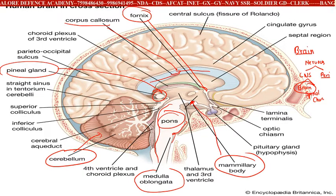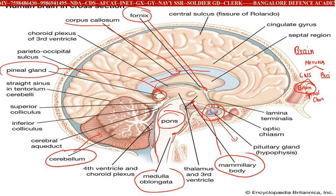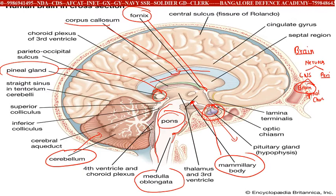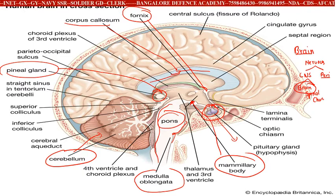Next you have the pituitary gland. This gland is very important — it is also called the master gland. So this is how our brain is divided into different sections.